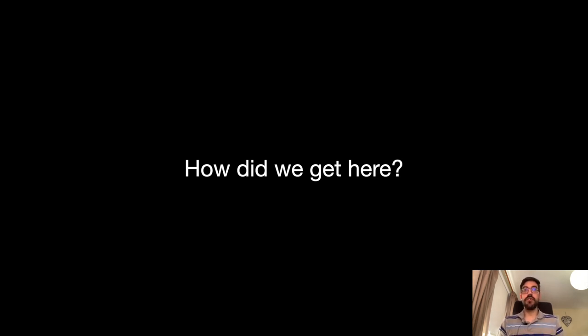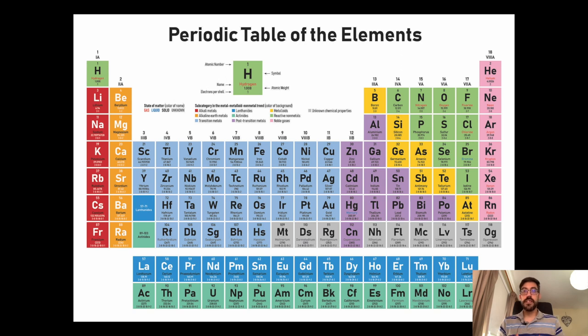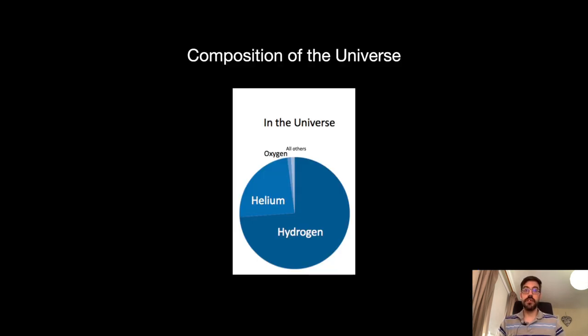Let's have a look at the periodic table of elements. These are all the known elements that make up the universe. From the simplest of all, hydrogen, to more complex ones like gold, platinum or lead. If we look at the composition of the universe, we realize that the most common element in the entire universe is hydrogen followed by helium.